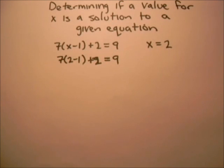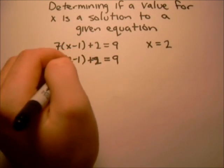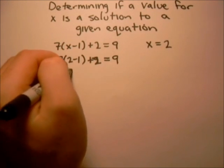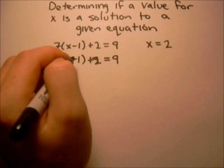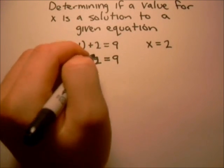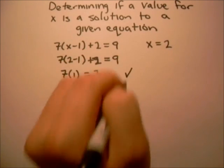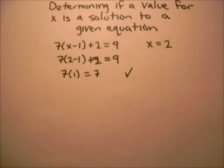Now we want to figure out if this is a true statement by simplifying it. So what we can do is subtract the 2 from both sides, and we'll get 7 times, now we have 2 minus 1, that's just 1, equals 9 minus 2, and that's 7. And that's a true statement. So we know that x equals 2 is a solution to this equation.